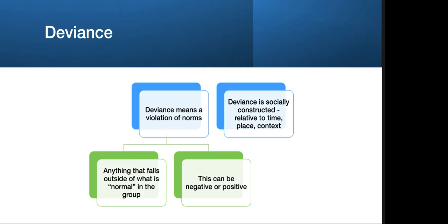In a very simplistic sense, deviance by definition just means a violation of norms. That's it. Deviance just means to break norms — anything that falls outside of what is normal within a group. Marvel even uses the word deviance to describe its villains. These are constructed ideological concepts. Deviance is socially constructed; it's relative to time, place, and context — or said another way: sin, sickness, and selected.